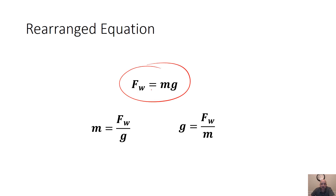This equation we're going to use a lot. This is just a rearranging. If you ever wanted to get M or G separately, you would divide. If I wanted M, I would divide G out — so it would be Fw over G. And if I wanted G, I'd divide the M out, giving G equals Fw over M.